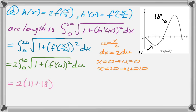So it's 2 times the arc lengths, which are 11 and 18, so we add those together. That gives us 2 times 29, which is 58, and that's the answer to the question. I hope you found this helpful, and good luck.